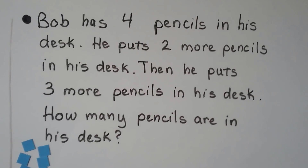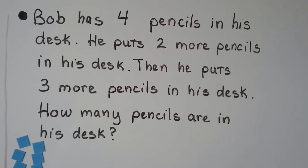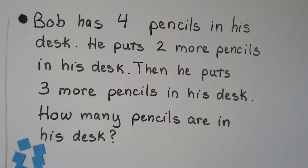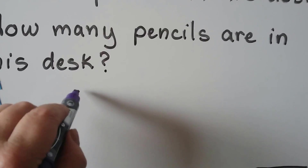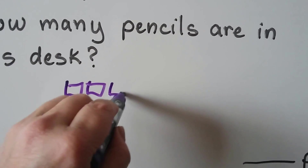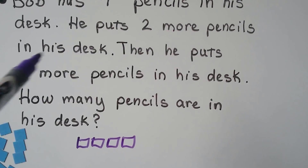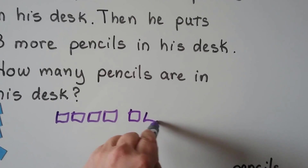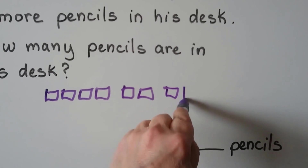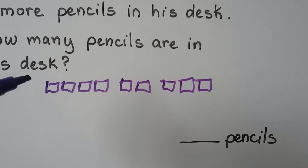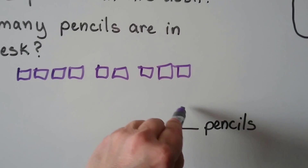Bob has four pencils in his desk. He puts two more pencils in his desk, then he puts three more pencils in his desk. How many pencils are in his desk? We draw four counters for the four pencils, then two more, then three more. We count them all: one, two, three, four, five, six, seven, eight, nine pencils in all.